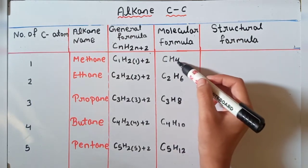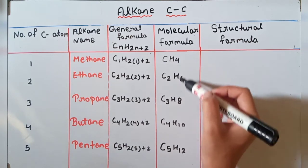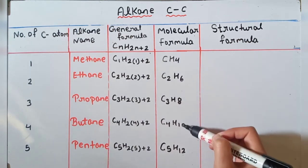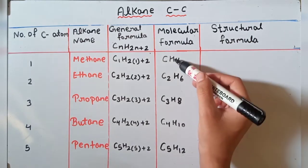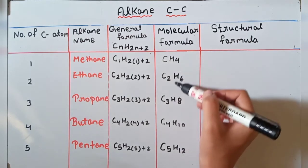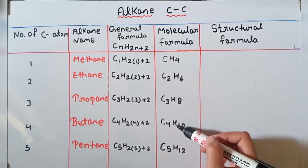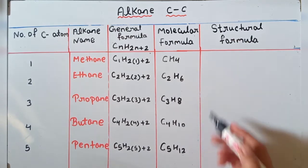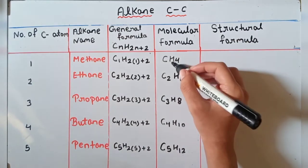H ki series dekhein: H4 hai, to 4 mein 2 add kijiye 6 milega, 6 mein 2 add kijiye 8 milega, 8 mein 2 — 10, 10 mein plus 2 karenge to 12 milega. That is methane, ethane, propane, butane, and pentane — these are the molecular formulas.